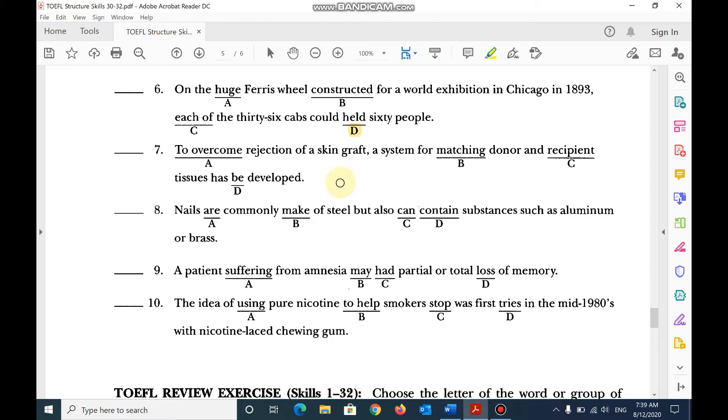Number 7, to overcome rejection of a skin graft, a system for, this is gerund, matching donor and recipient tissues has been developed.